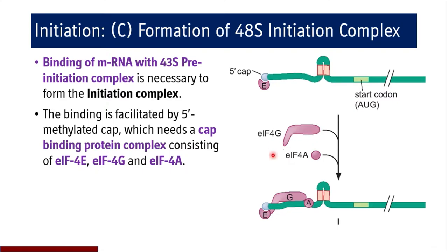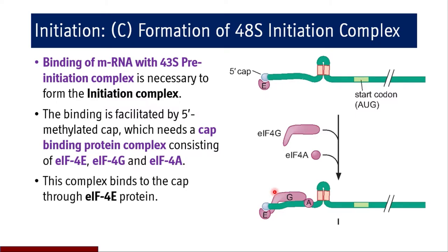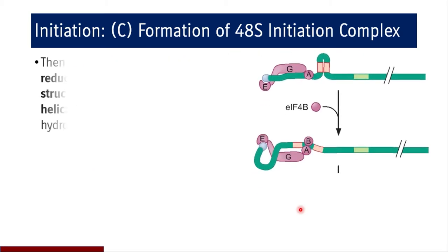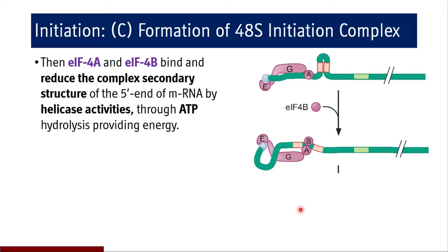EIF4E acts as a bridge for EIF4G and EIF4A. Then EIF4A and EIF4B bind and reduce the complex secondary structure of the 5' end of mRNA by helicase activity through ATP hydrolysis, providing energy. EIF4B binds to the 5' methylated cap binding protein complex, hydrolyzes ATP, and reduces the complex secondary structure of the 5' end of mRNA by helicase activity.